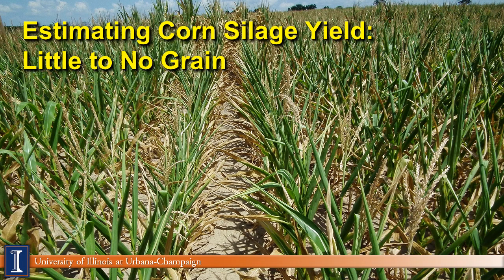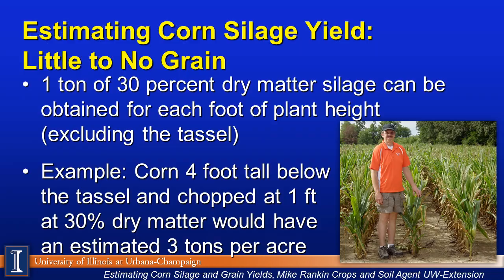Now let's look at estimating corn silage yield with little or no grain in the product. Here's one thumb rule: 1 ton of 30% dry matter silage can be obtained for each foot of plant height, excluding the tassel. You can see Jim Baltz standing in the field — that field fits right into that category, with quite a bit that was planted mid or a little later in the spring and really got hammered. So in our example, if corn is four feet tall and chopped at one foot, that's about 3 tons per acre.